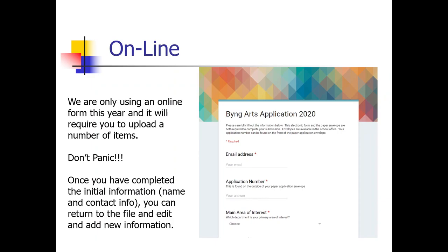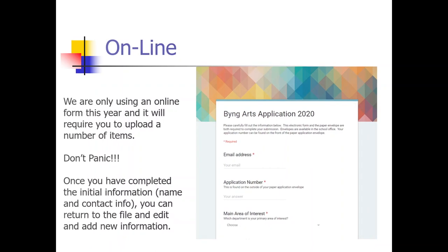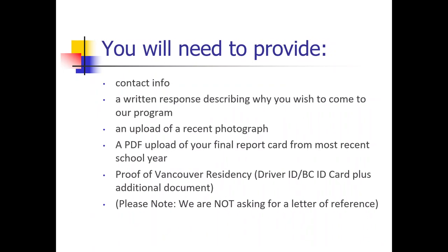When you enter your email address, that email will be used to give you a link that you can keep adding more information to as you go along. So get your contact info in first, hit submit so you have a placeholder, and then do the work over November and December, having it done by January 1st for us. I'll explain in a moment why we have two due dates. Before you even go online, here are some things you can do to get ready.